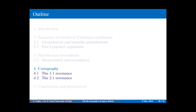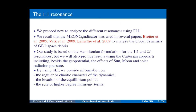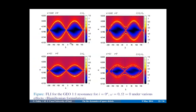Let's proceed to see some results obtained using the first Lyapunov indicator, starting with the 1-to-1 resonance. The FMFT indicator has been used in some papers to analyze the dynamics of geospace debris. In the case of the 1-to-1 resonance, I'd like to point out the role of higher-degree harmonic terms. In these plots, we represent the first Lyapunov indicator as a function of stroboscopic mean longitude lambda and the semi-major axis. On the left, taking into account only J2 and J22 as perturbations, we get pendulum-like plots with libration regions in blue and circulation regions in purple.